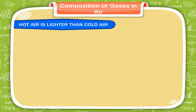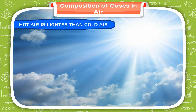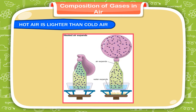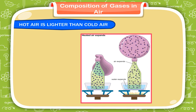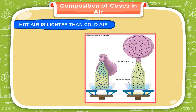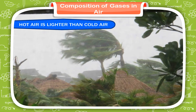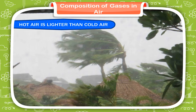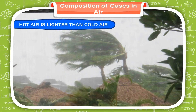Hot air is lighter than cold air. Due to sunlight, air is heated easily. On heating, air becomes lighter and moves upwards and expands. This is called expansion of air. When air expands, it becomes lighter and rises up, and cold air rushes to replace it. This causes winds and storms.